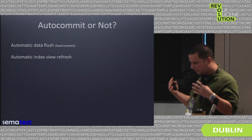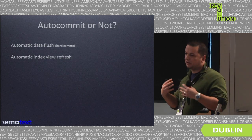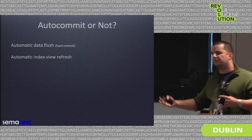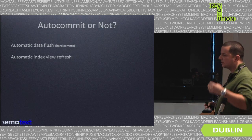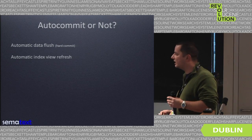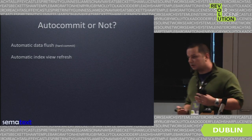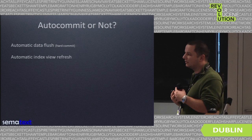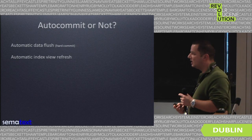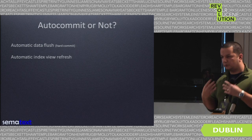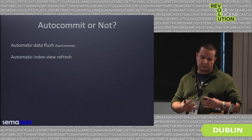Imagine you have multiple data sources writing to Solr at the same time and you don't want each application to commit after every document. That's why in Solr we have autocommit. There are two types: the hard autocommit — the standard autocommit present in Solr — and the soft autocommit. They're both about visibility and durability. The hard autocommit flushes your data to disk, while the soft autocommit refreshes the view of the index by reopening the index searcher object.